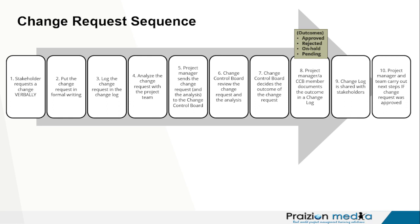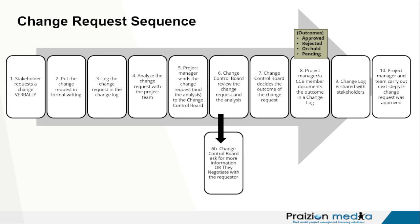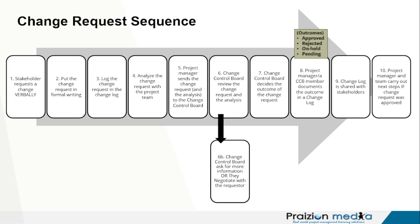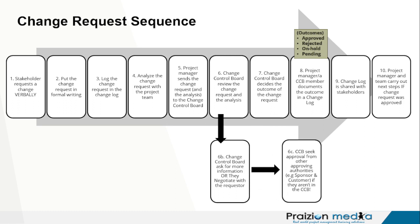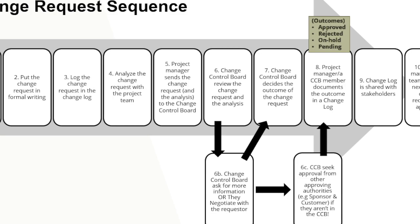The project manager can then carry out the next steps if the change request was approved. The outcome could be: approve it, reject it, put it on hold, or answer pending other information or other actions. Some of those actions could be getting in touch with a customer to negotiate something different. Another offshoot could be seeking approval from other authorities like the sponsor and the customer if they are not in the CCB. This is the mindset that will really help you on your exam.